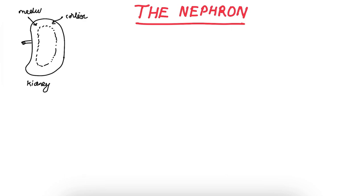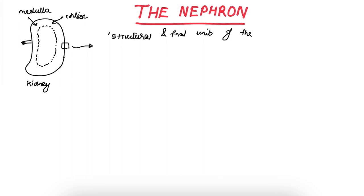If we take a section of the kidney, we see it is made up of millions of nephrons. A nephron is the structural and functional unit of the kidney — structural meaning it is an anatomical unit, and physiological meaning it is a functional unit. Being the physiological unit, each single nephron is capable of performing all the functions which the kidney can perform.